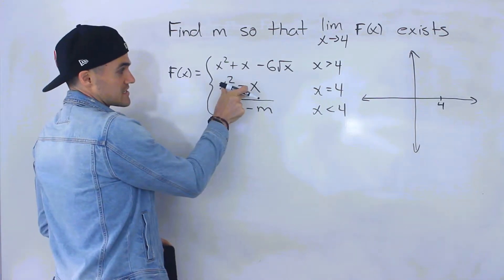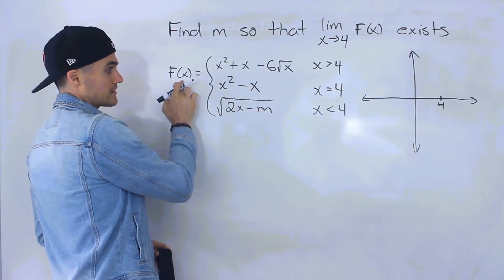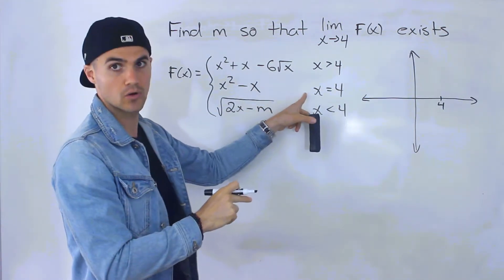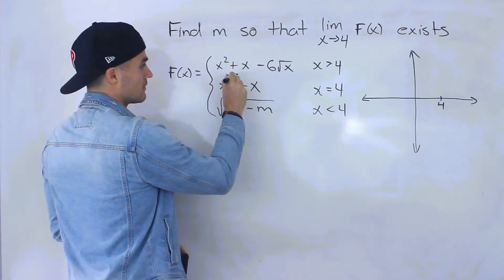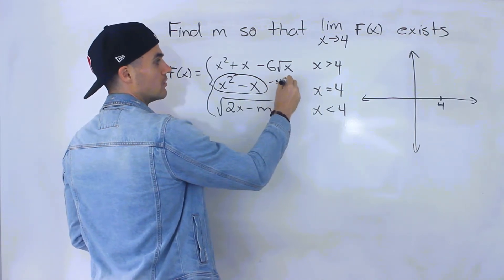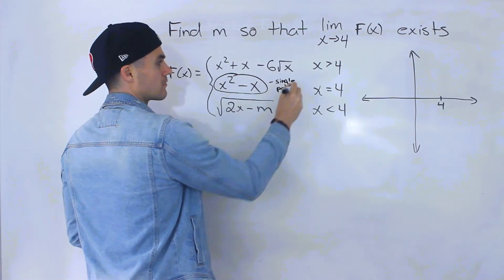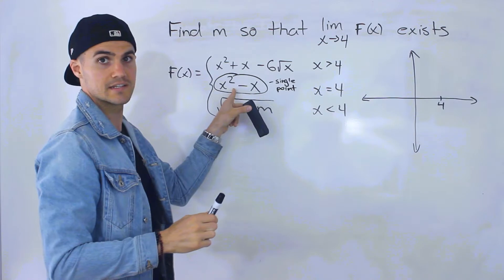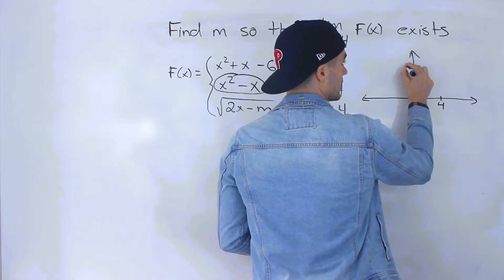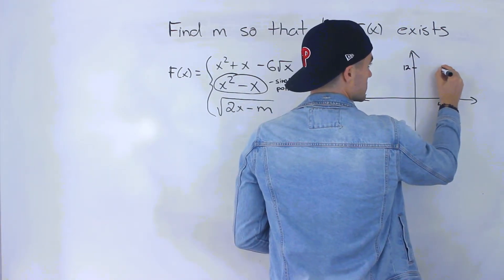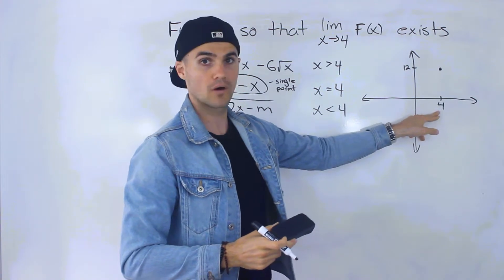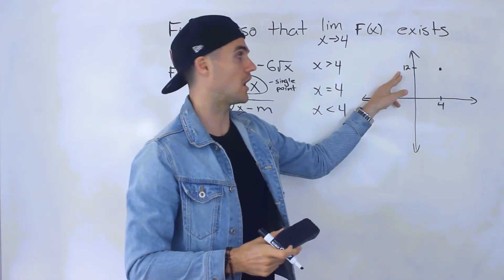I want to start with the middle function. f of x is defined by x squared minus x when x is equal to 4. Because it's only for x equals 4, this is just a single point. If we plug in x equals 4, we get 4 squared minus 4, which equals 12. So f of x is defined at x equals 4 at a y value of 12.